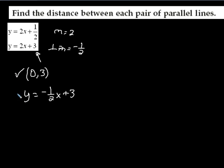I already have one point to work on, 0, 3. I've got to find another point. So I'm going to set this equation, negative 1 half x plus 3, equal to the top equation, 2x plus 1 half.